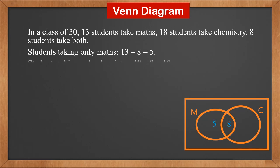We mark 5 in the math only part. Students taking only chemistry is 18 minus 8, which is 10. We mark 10 in the chemistry only part.